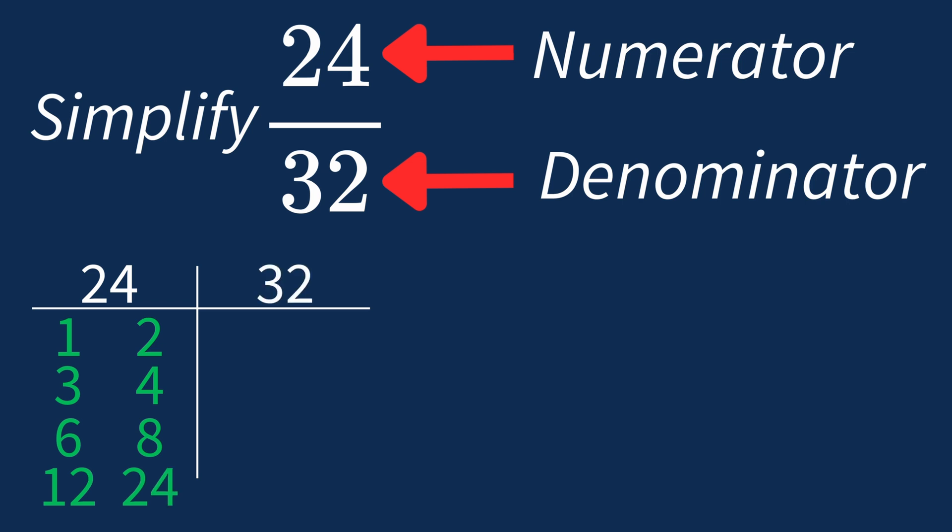For 32, the factors are 1, 2, 4, 8, 16, and 32.